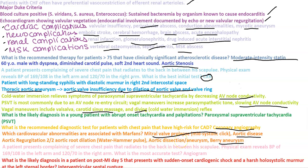A patient presents with severe chest pain radiating to the back between the scapula. Physical exam reveals BP of 169/108 in the left arm and 120/70 in the right arm. The most accurate test is CT angiogram. This person has aortic dissection.